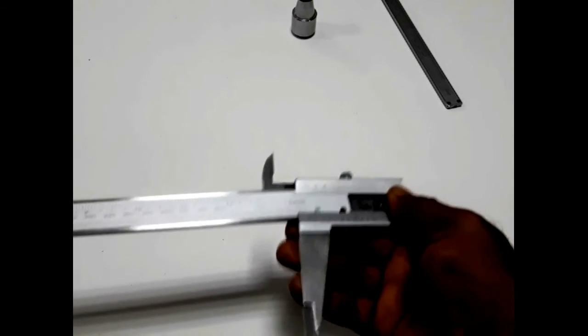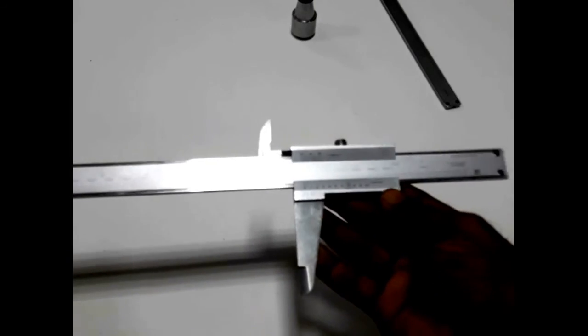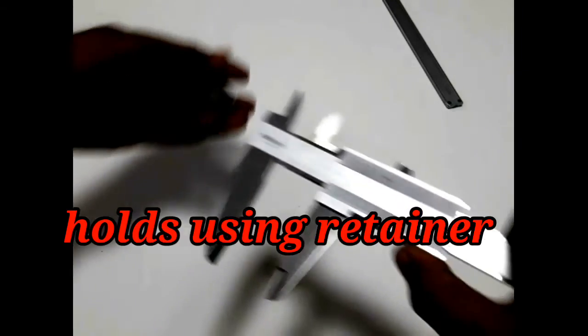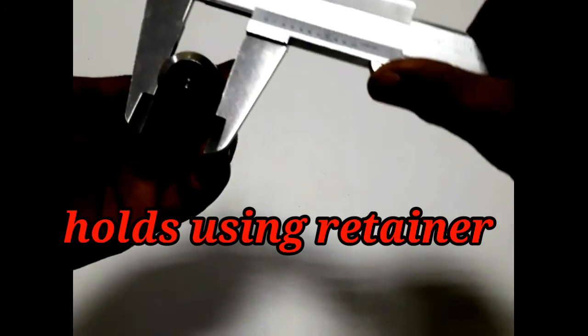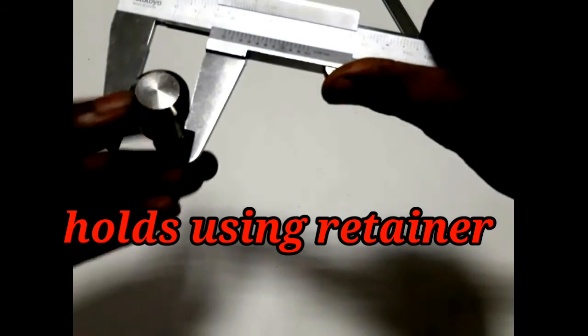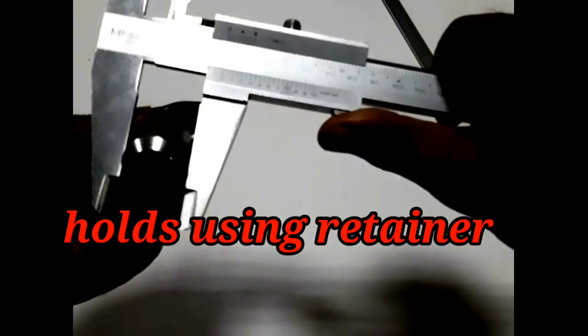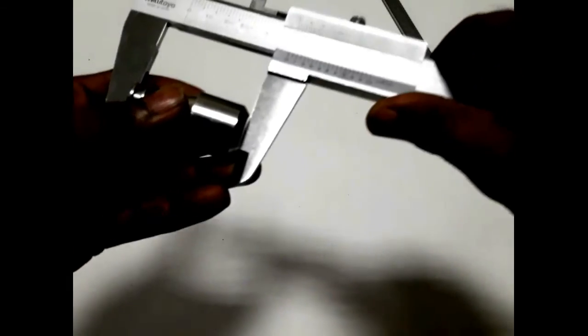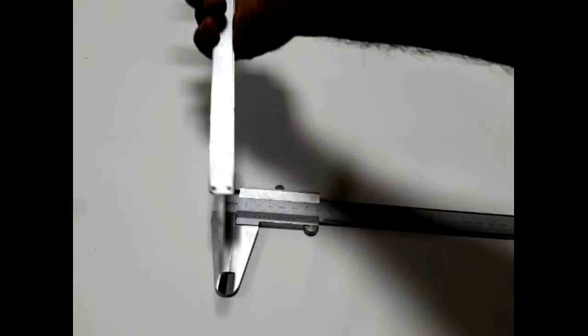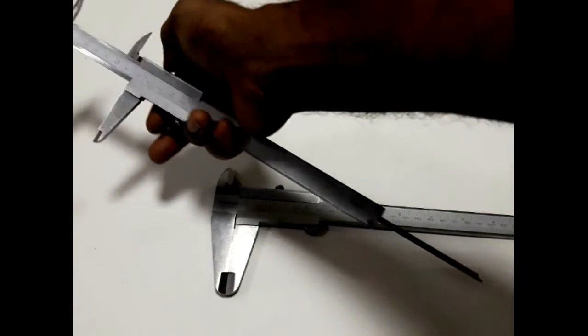Vernier scale slides throughout the length of the beam or main scale and can be locked anywhere. Jobs can be held in between jaws using retainer. Depth can be measured using depth prong or depth gauge.